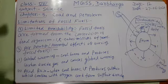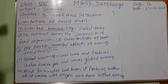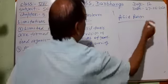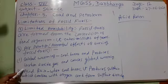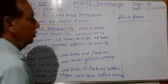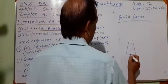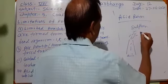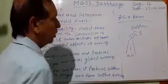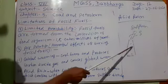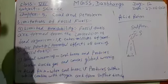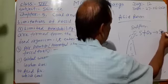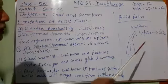Now we have to discuss acid rain. When coal burns, it releases sulfur gas. This sulfur gas goes to the atmosphere. In the atmosphere, oxygen is also present. Sulfur combines with oxygen present in the atmosphere: S plus O2 gives SO2. SO2 means sulfur dioxide. Sulfur plus oxygen forms sulfur dioxide.